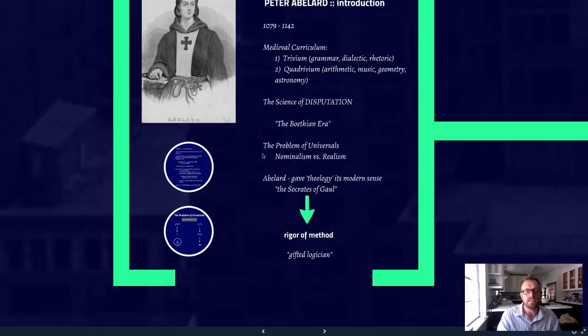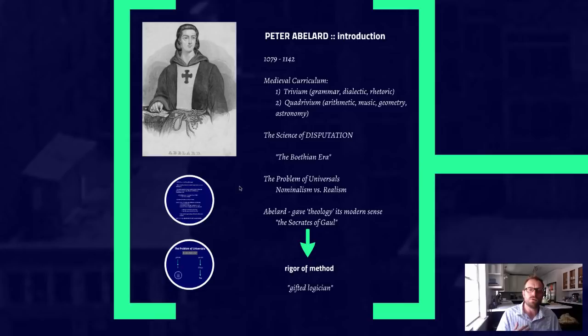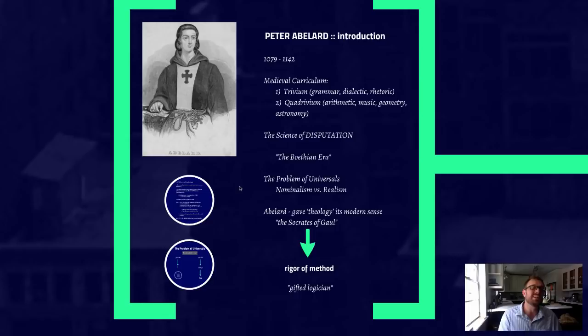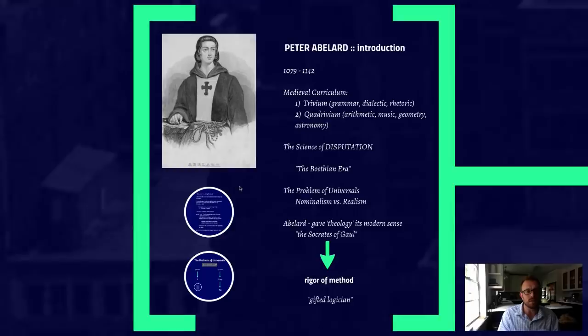Abelard is highly credited with being the first major medieval philosopher to articulate theology in its modern and contemporary sense. Due to a famous trial, he would sometimes be called the Socrates of Gaul. He is one of the greatest philosophers of his day because of the rigor of his method — he was a very gifted logician whose work in logic has had a lasting impact throughout the Middle Ages and is still well regarded today.